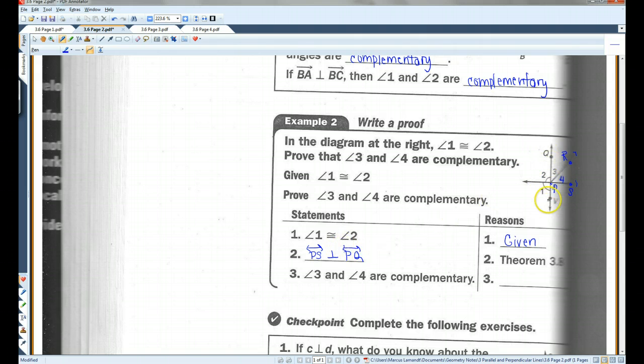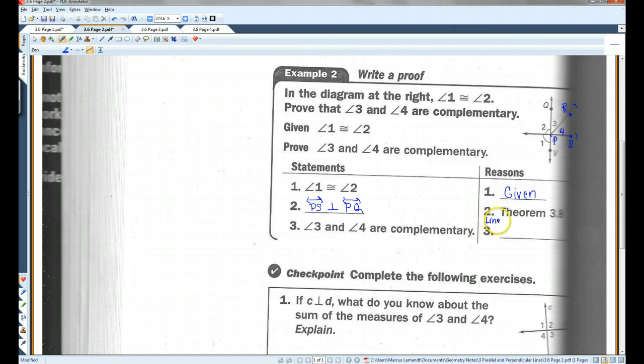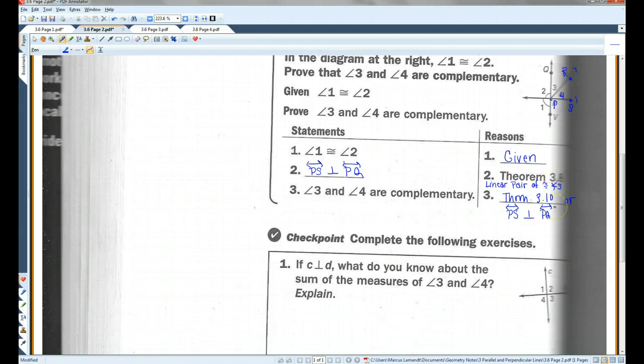You could also call this VQ, because there's a V down here. Either way, it's fine. Theorem 3.8. Or you can write down linear pair of congruent angles, which is basically what that theorem says. That's fine, too. Angles 3 and 4 are complementary. You could write theorem 3.10. Or you could just write down that PS is perpendicular to PQ, which is essentially what that theorem says. It says that if these two lines are perpendicular, then obviously these two have to be complementary.